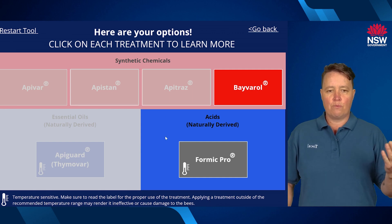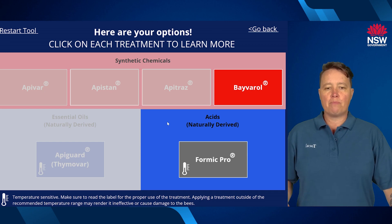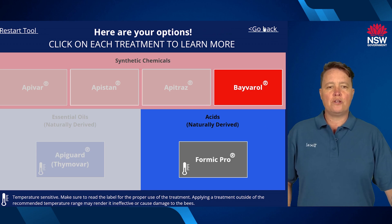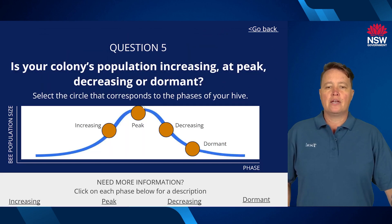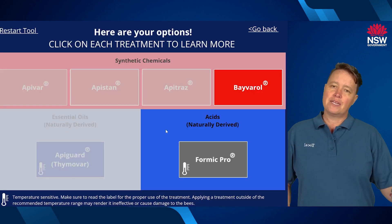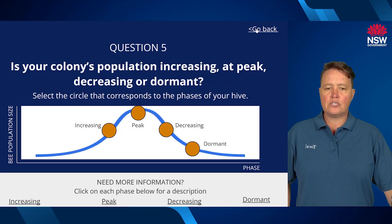With this example — brood present, honey supers present, and at peak population — your two options at this stage are Apivar and Formic Pro. If you're not a hundred percent sure and want to go back, you can select Go Back. Choosing decreasing population still gives you the same options because you have brood and honey supers present. It's a very easy to use tool.